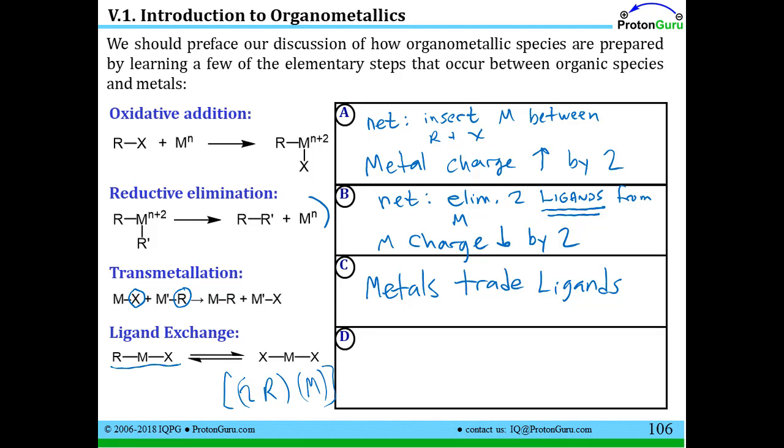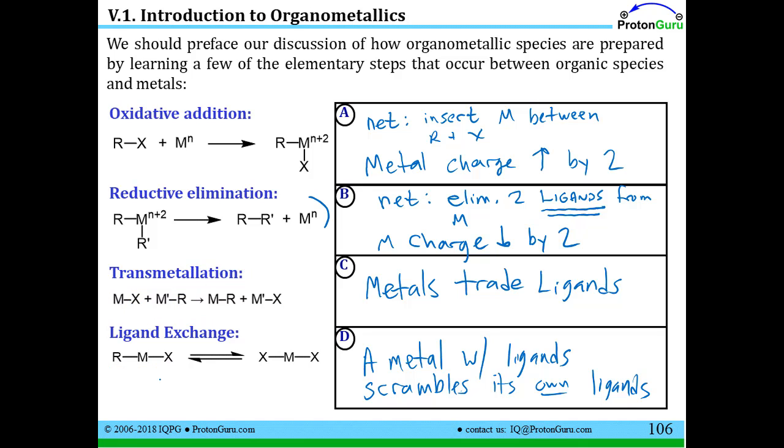The point is, if I have R-type ligands and X-type ligands on a metal, I can have some type of scrambling where I can rearrange how those are attached. Some things may break off and attach to each other. But this is called a ligand exchange process. So the net result is the metal scrambles its own ligands. It doesn't need a separate metal complex to react with it. So that's how it differs from transmetallation.